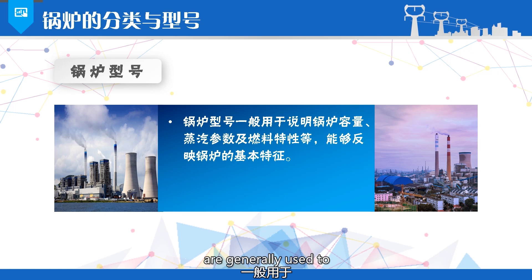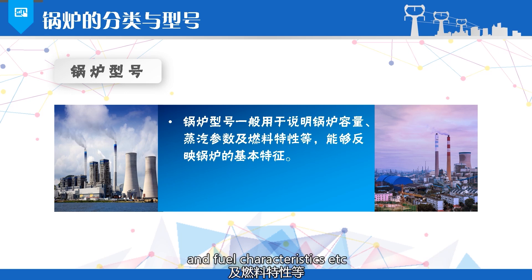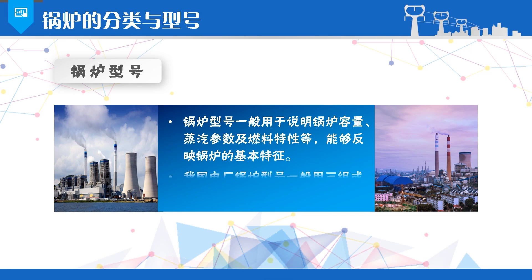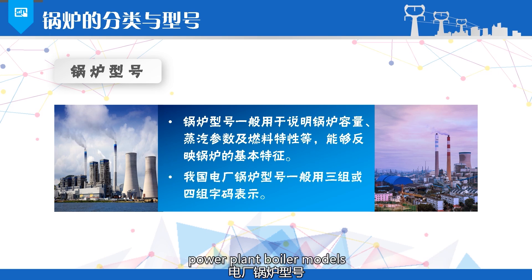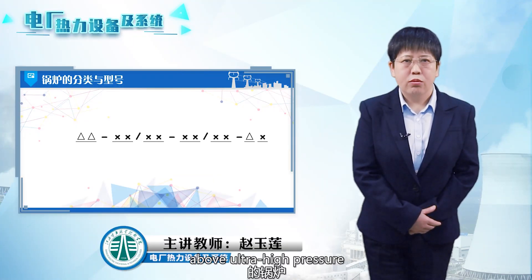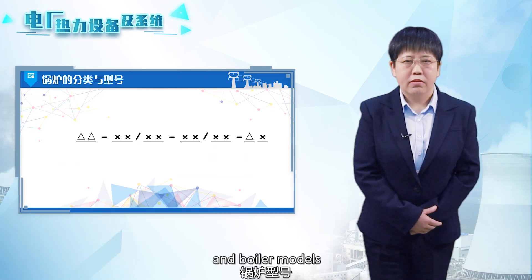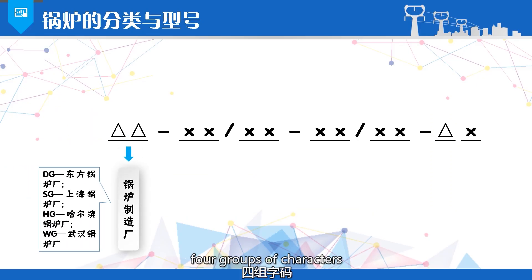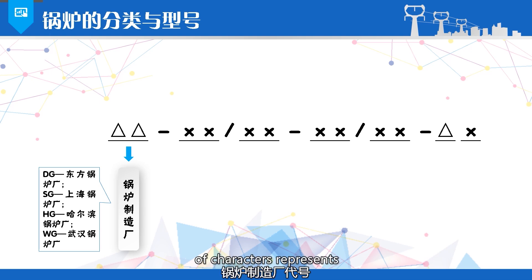Boiler models are generally used to indicate the boiler capacity, steam parameters, and fuel characteristics, which can reflect the basic features of the boiler. In China, power plant boiler models are generally represented by three or four groups of characters. Typically, boilers at ultra-high pressure and above are equipped with intermediate reheaters, and boiler models generally use four groups of characters.